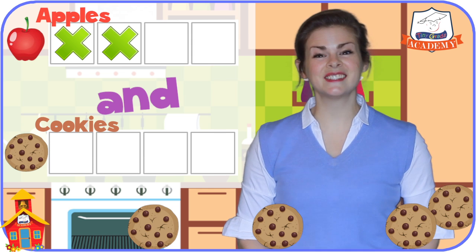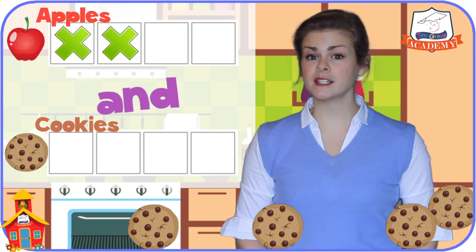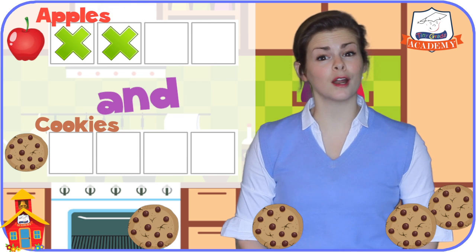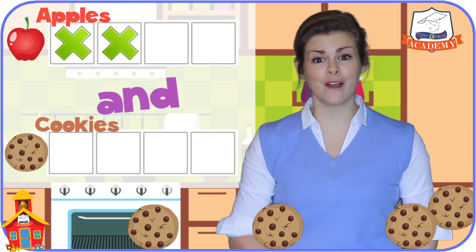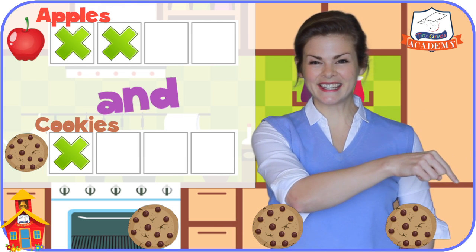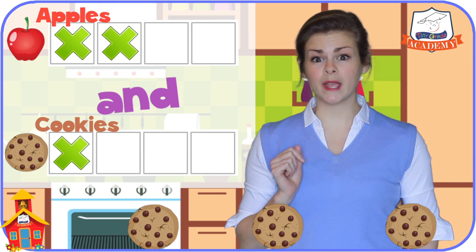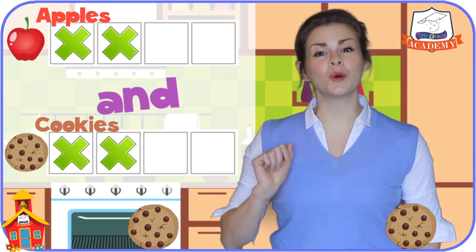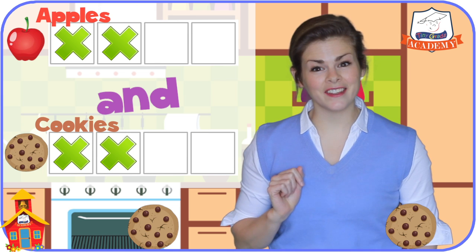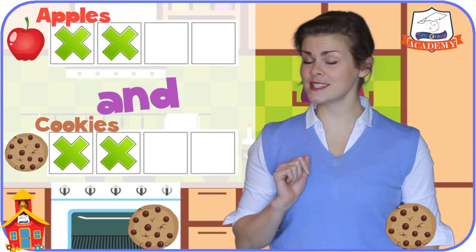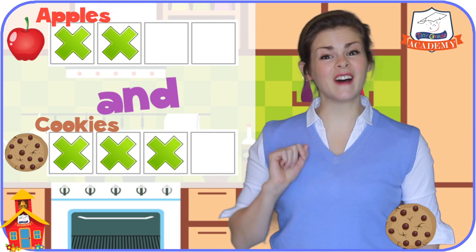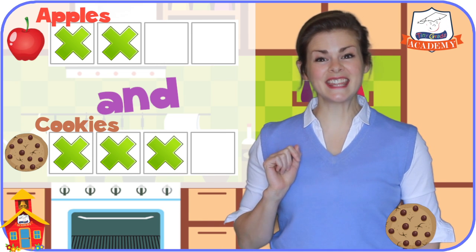Now let's do the cookies. Let's put an X in the box next to the cookie in our picture graph for this one. And then we have this one, so we'll need another X. And this one. And finally, this one.